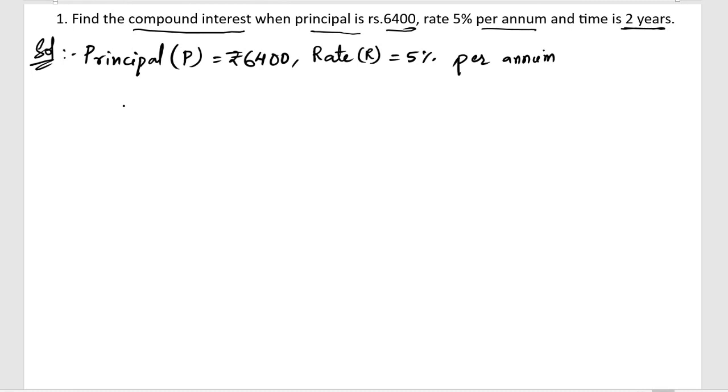for each year and the time is given as, time is represented by capital T, so it is going to be represented by T, so that is 2 years.